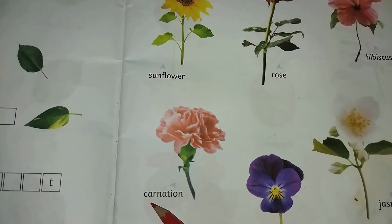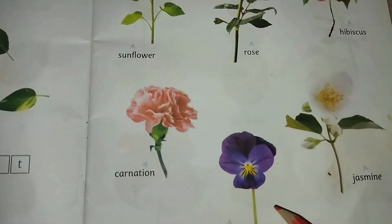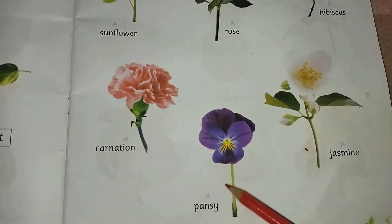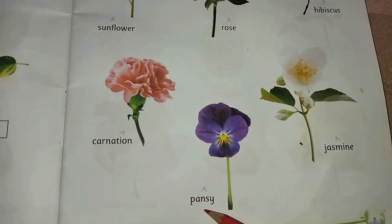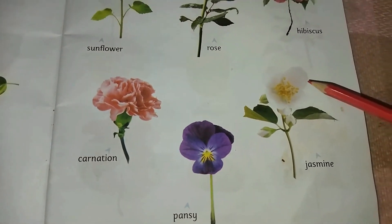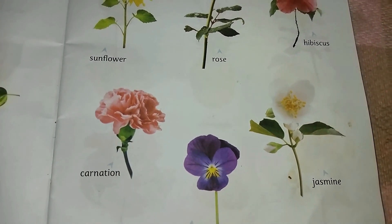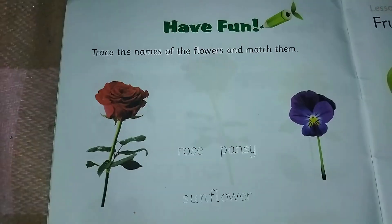Carnation. This purple flower is pansy, and jasmine is a white color plant.